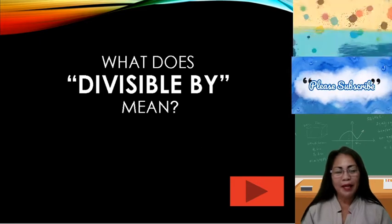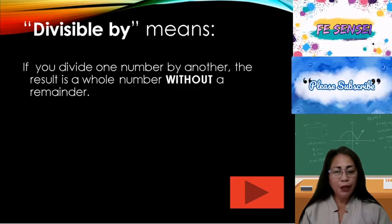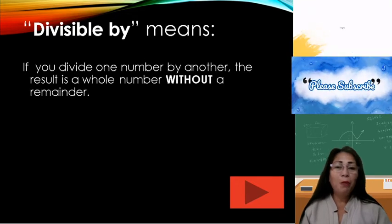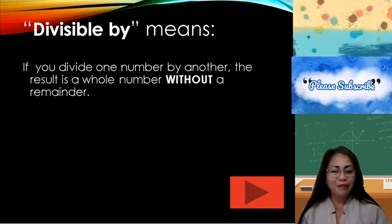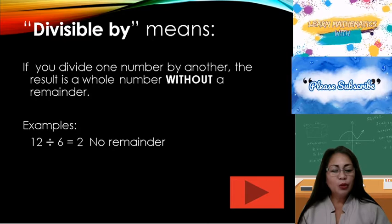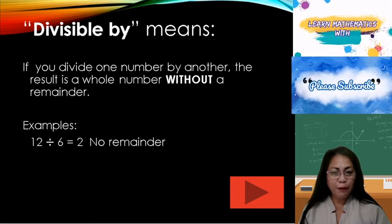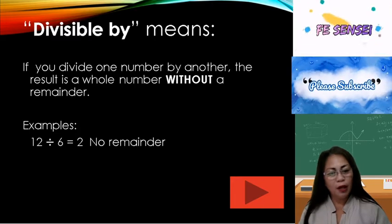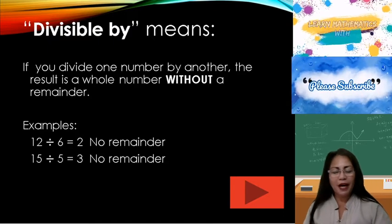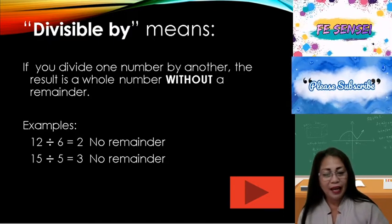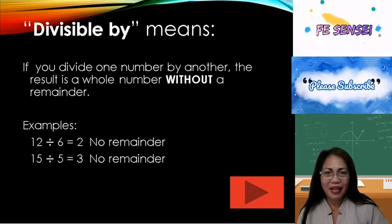What does divisible by mean? Divisible by means if you divide one number by another, the result is a whole number without a remainder. Example: 12 divided by 6 equals 2. No remainder. Therefore, 12 is divisible by 6. Another example: 15 divided by 5 equals 3. No remainder. Therefore, 15 is divisible by 3.